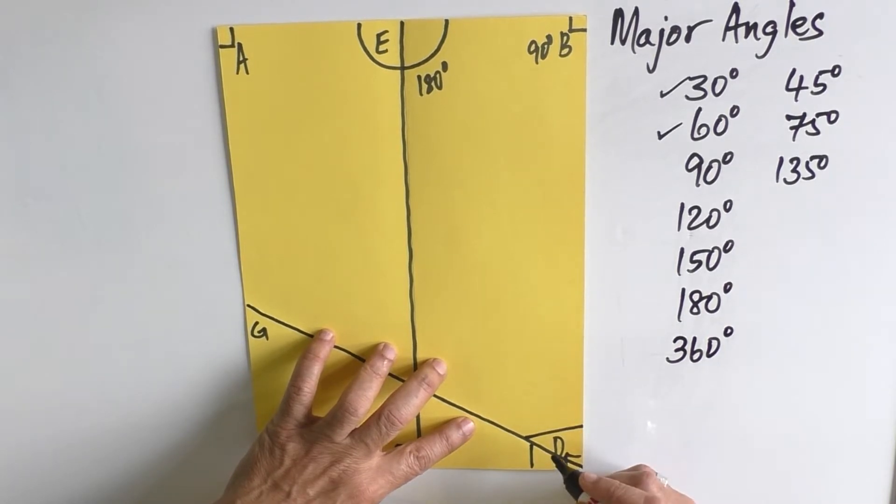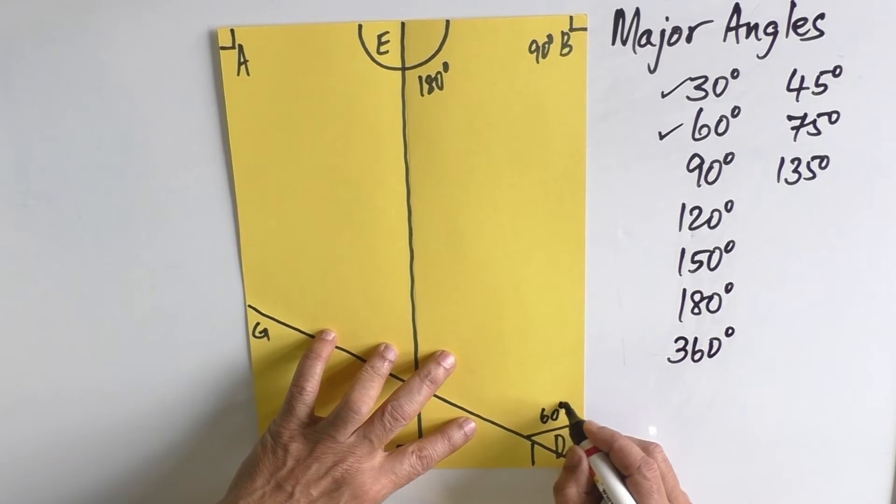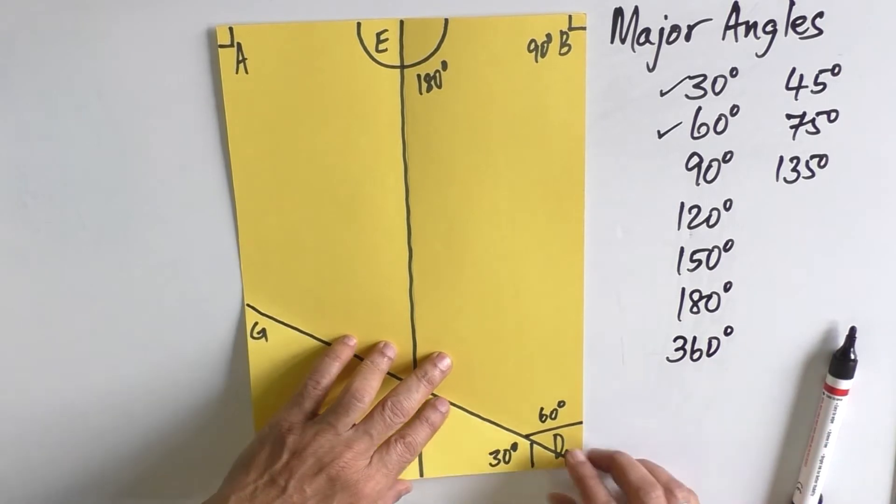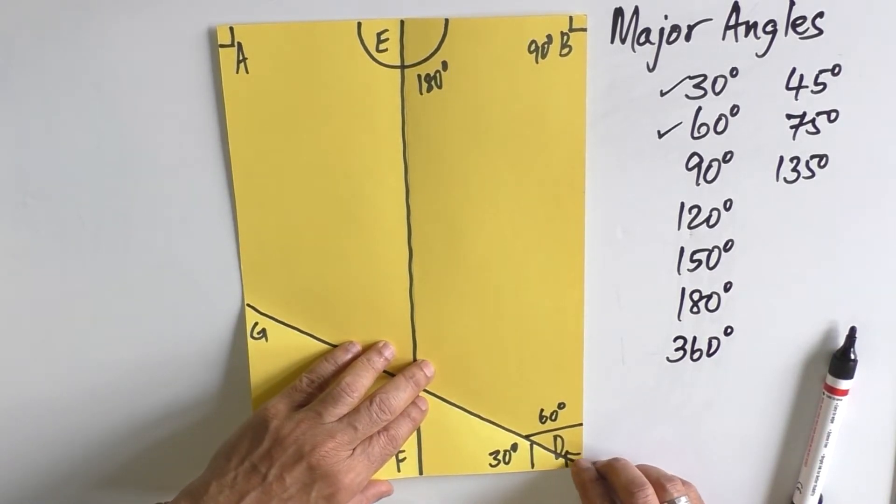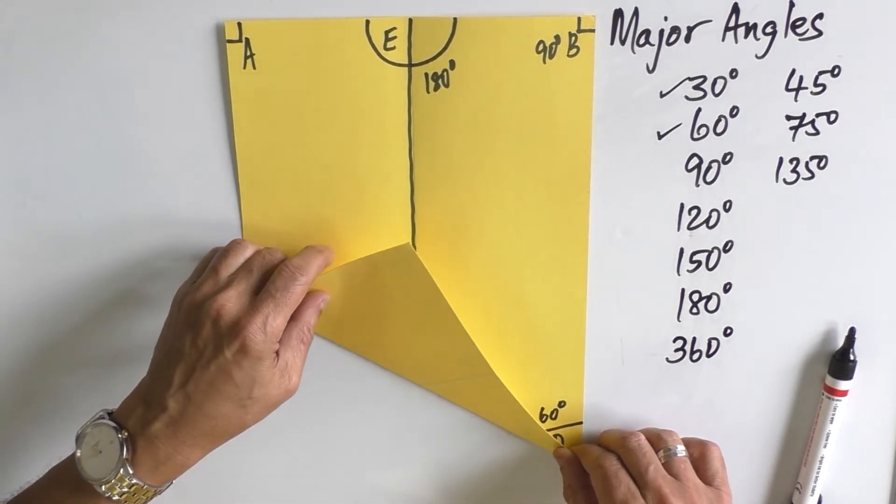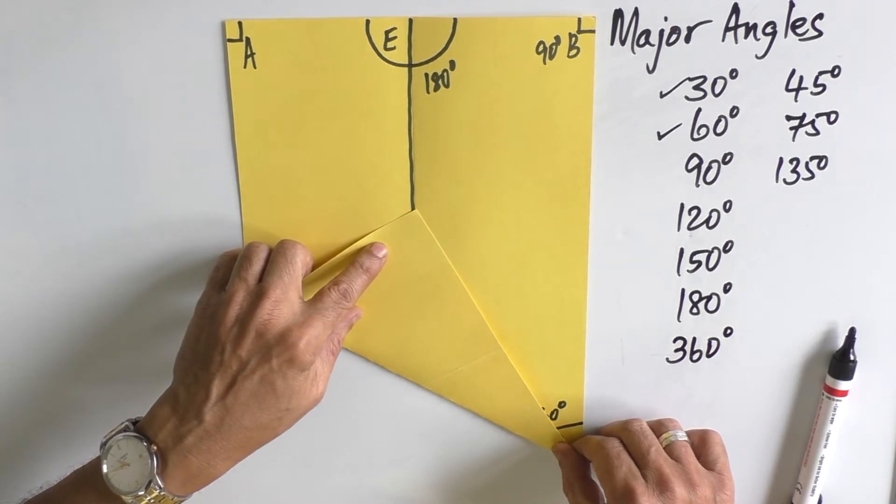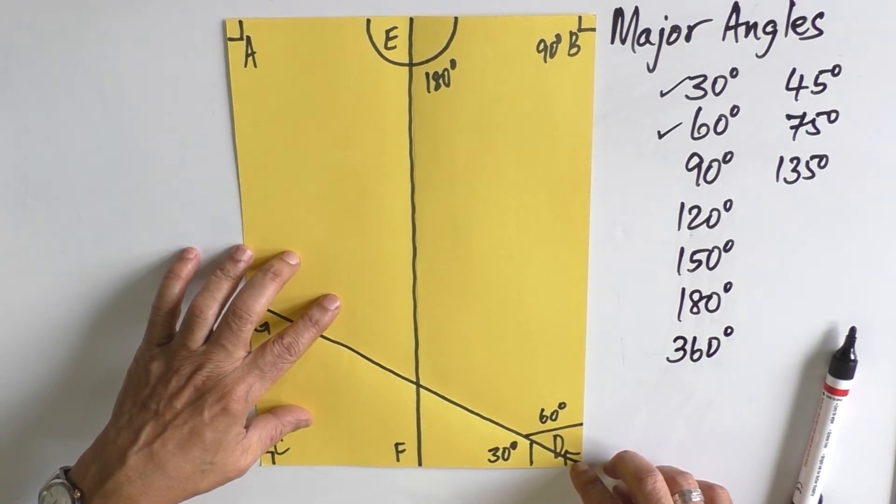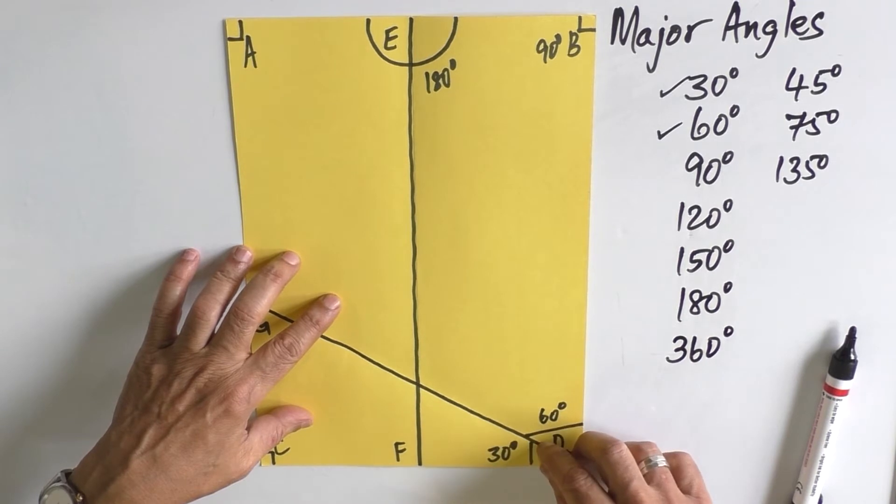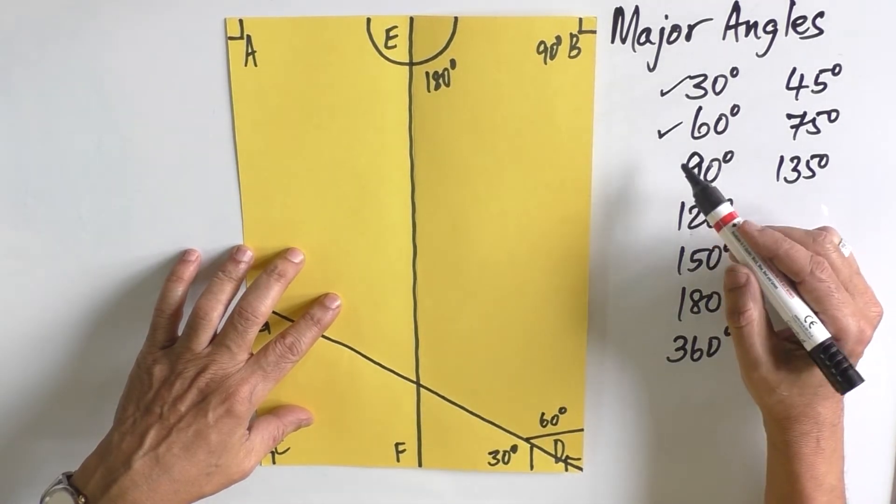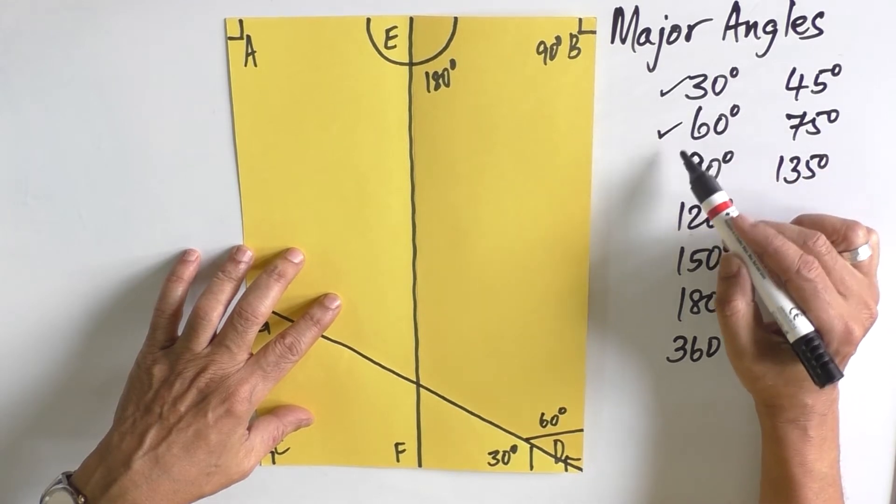Now, if you use a measuring device, you can find that the major angle is 60 degrees and the minor angle is 30 degrees. So how did we do it? We kept D intact, took C and it touched line EF. That automatically divides the angle into two parts in such a way that one part is 30 degrees and the other is 60 degrees.